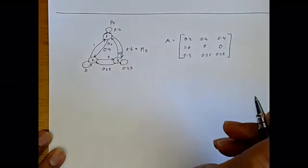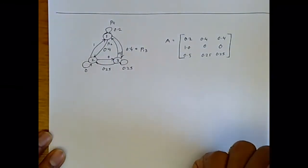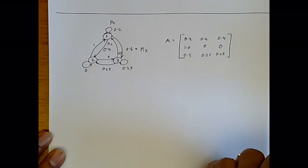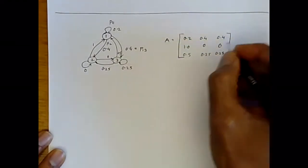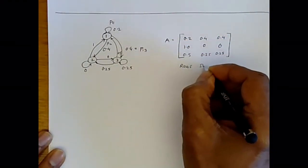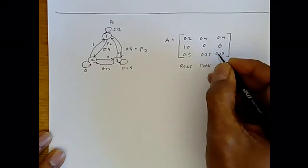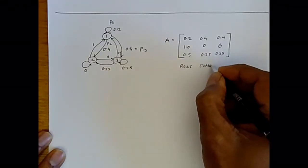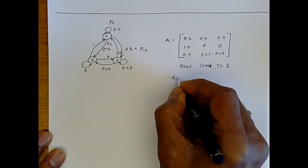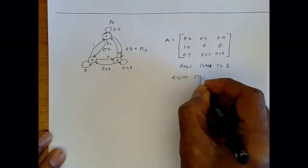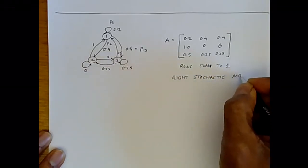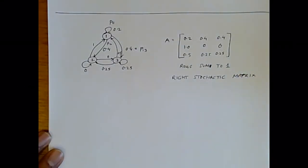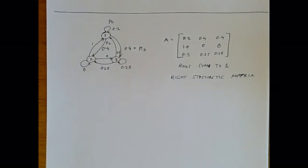And this transition probability matrix is a more succinct representation of the Markov process. And this particular kind of matrix, all the rows sum to 1, because we have to be somewhere at the end of the transition. Rows sum to 1, and therefore it's called a right stochastic matrix. And for those of you who are familiar with linear algebra, this means that this particular matrix has some very interesting properties with regard to its eigenvalues, but we won't discuss that in this course.